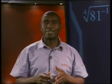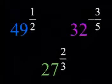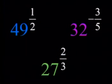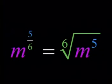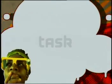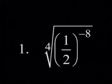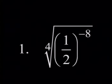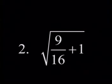Let's look again at what we covered in this lesson. A rational exponent is an exponent that is a fraction. Powers with rational exponents can be written as roots of powers with whole number exponents. In general, a to the power of m over n is the same as the nth root of a to the power of m. See if you can do this task: simplify — number 1, the fourth root of one half to the power of minus 8; number 2, the square root of 9 over 16 plus 1. We've come to the end of this lesson. Take some time to practice using exponents with roots and exponents written as fractions.